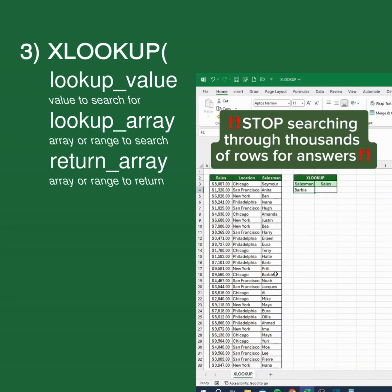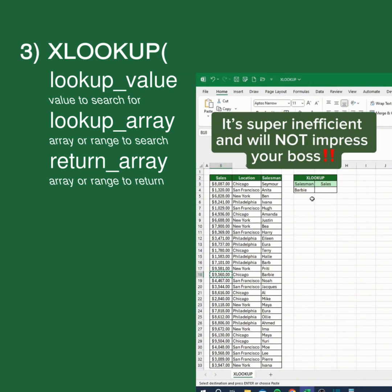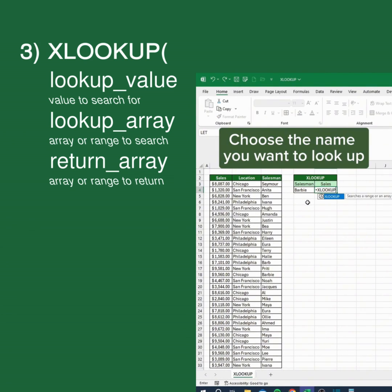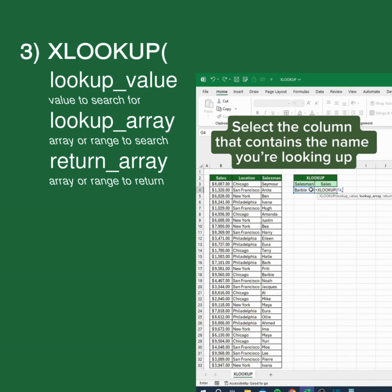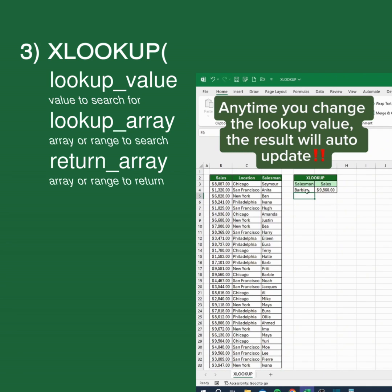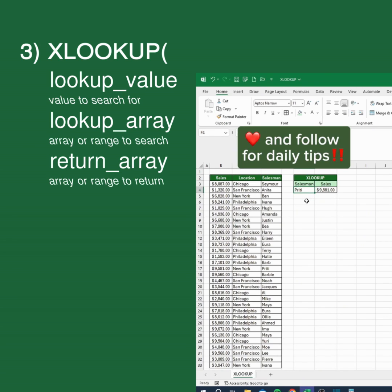Stop searching through thousands of rows for answers. It's super inefficient and will not impress your boss. Instead, type in XLOOKUP. Choose the name you want to look up. Select the column that contains the name you're looking up. Select the column that contains the result you're seeking. Anytime you change the lookup value, the result will auto-update. Like and follow for daily tips.